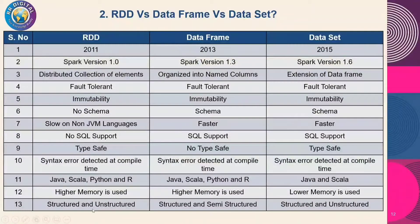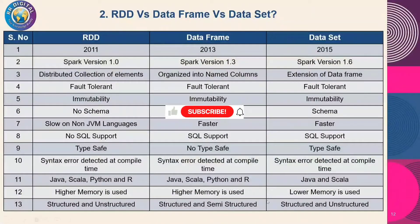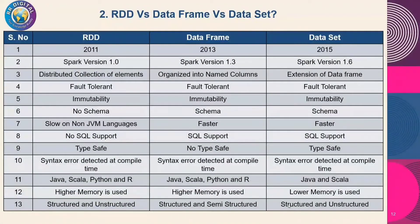Using RDD you can process structured and unstructured data. Using DataFrame you can process structured and semi-structured data. Dataset supports structured and unstructured data. This covers the difference between RDD, DataFrame, and Dataset. Thanks for watching this video.